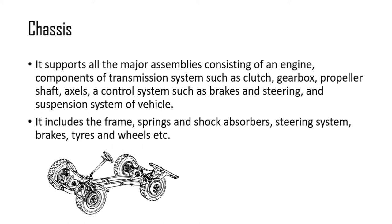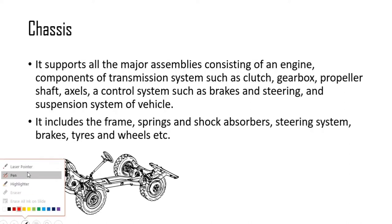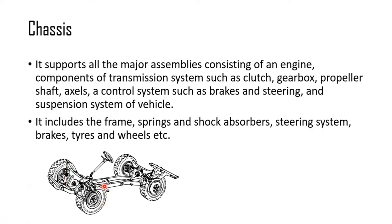The chassis is the main skeleton of the whole vehicle. All major assemblies will be done on it. This is the main chassis — the wheel and axle, and the transmission system, are all assembled on this chassis. All components are assembled on the chassis, so it is the backbone of the vehicle.